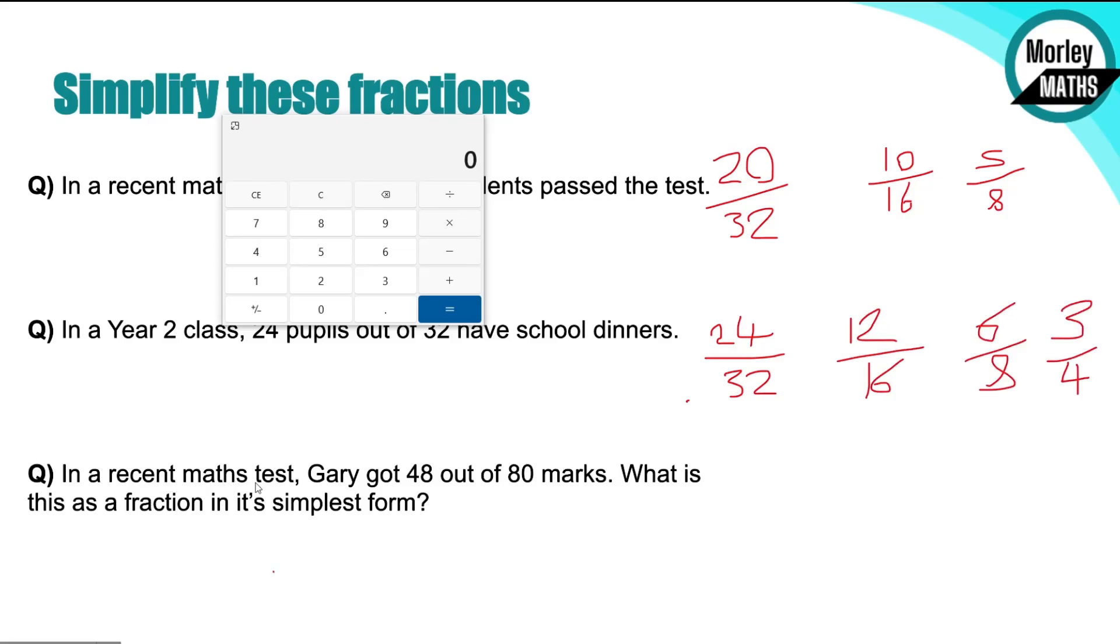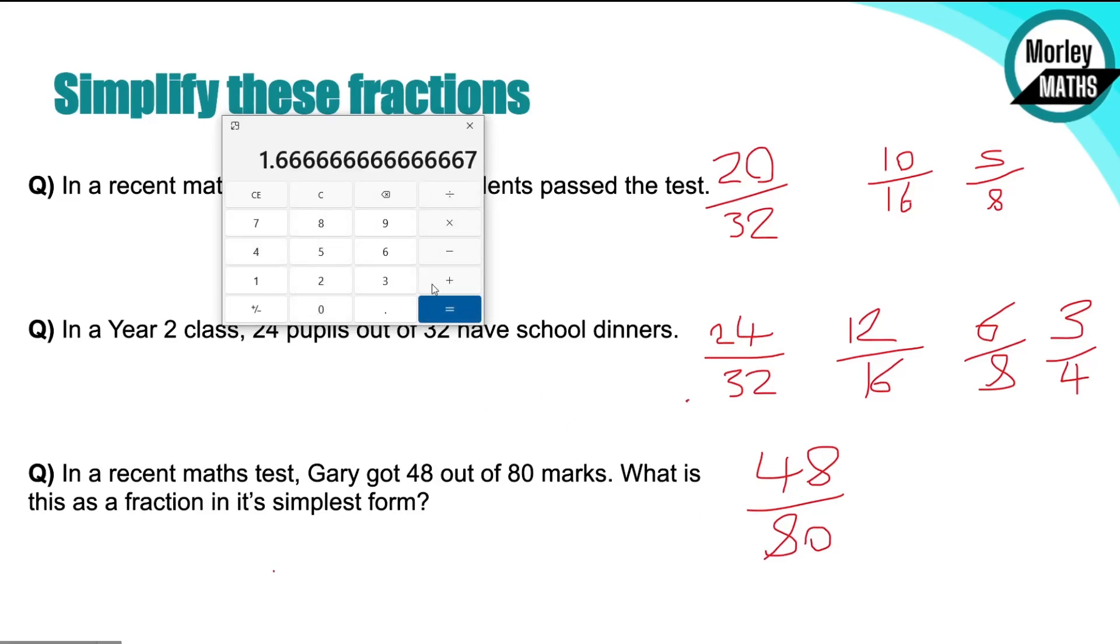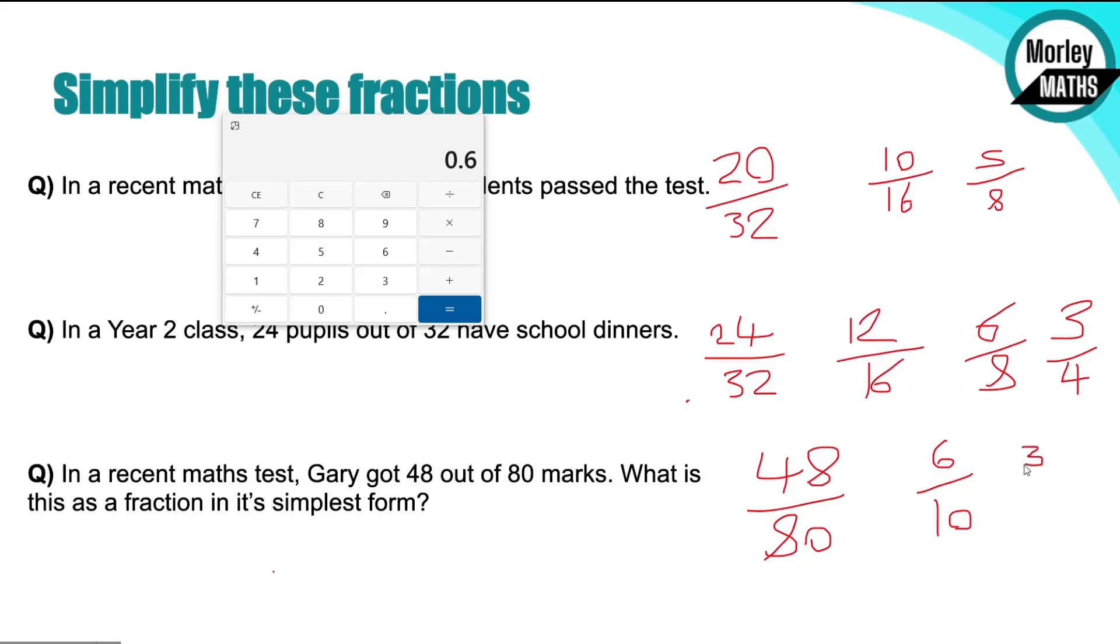So question three: in a recent math test, good old Gaz got 48 out of 80. What's his score as a fraction in its simplest form? So we've got 48 out of 80. Again, we can try dividing both of those by the top number. So if we did 80 divided by 48, it gives us that. So that first method doesn't work. We can try and turn it into a decimal. So 48 divided by 80 gives us 0.6. So we have been able to bring that down to something we can deal with. So 0.6, and then we can halve that to 3 over 5.